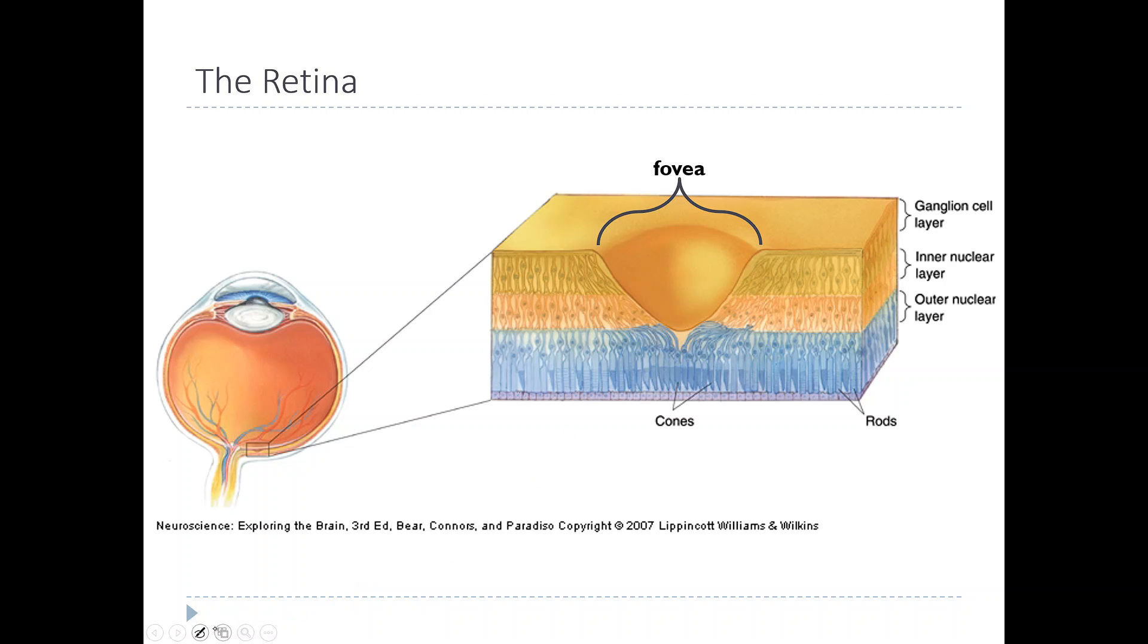For cells that are not in the fovea, if light comes in to the fovea, it goes straight to those photoreceptors. But if light comes in and hits a cell not in the fovea, it has to pass through all these other layers first. In fact, those cells absorb some of the light before it gets to the photoreceptors. So the fovea is sort of dented like this to maximize the amount of light that actually hits those photoreceptors.